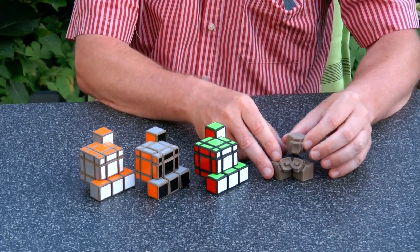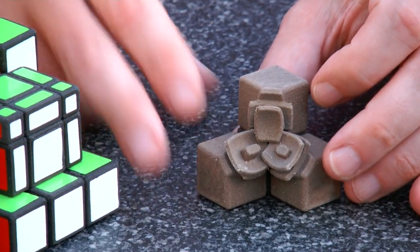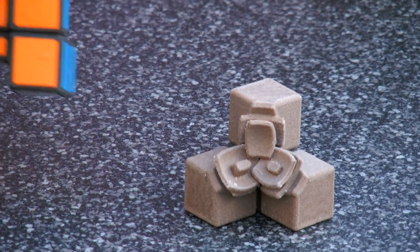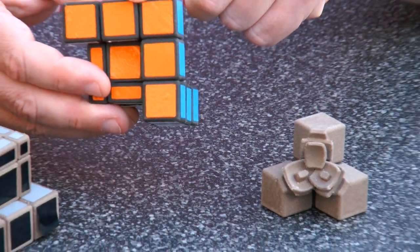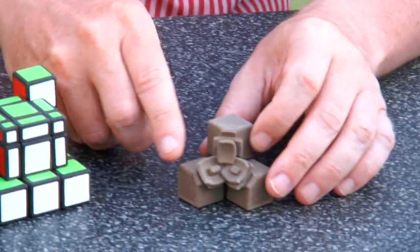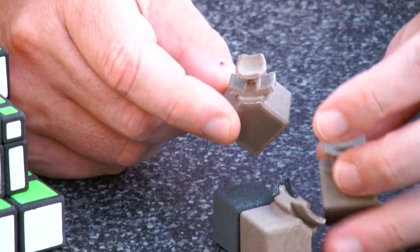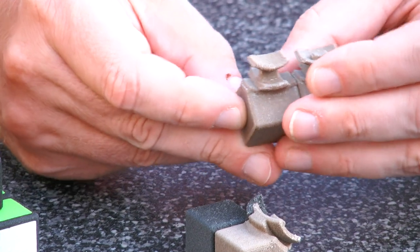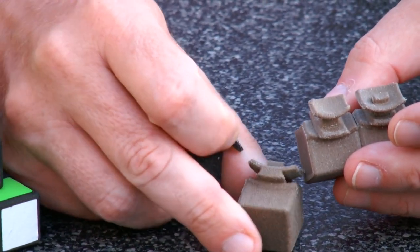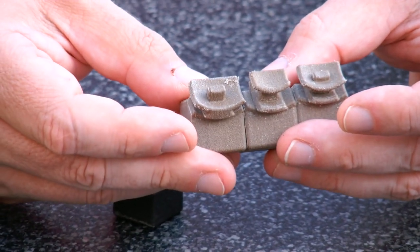So here we have 3D printed edges, and the trick of the puzzle is that these three edges, one, two, three, they have a special internal shape. You see this one sticks out like this. The other one slightly less, and here we have the third one that looks like this.